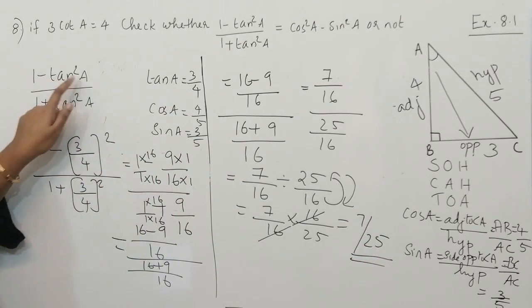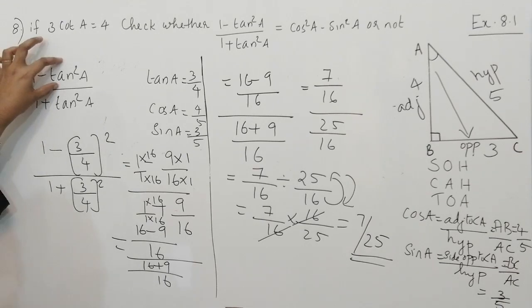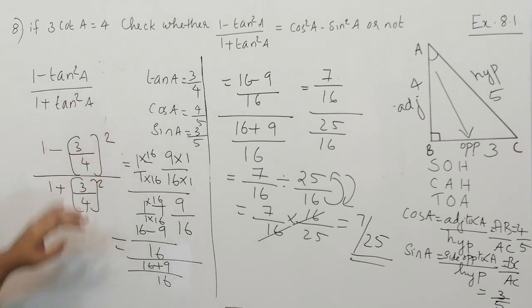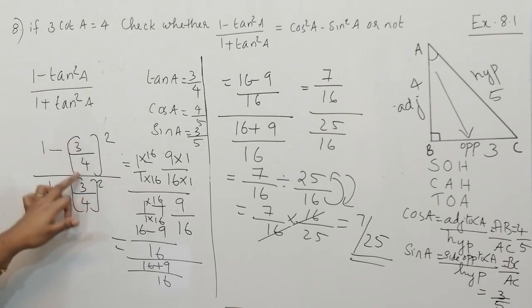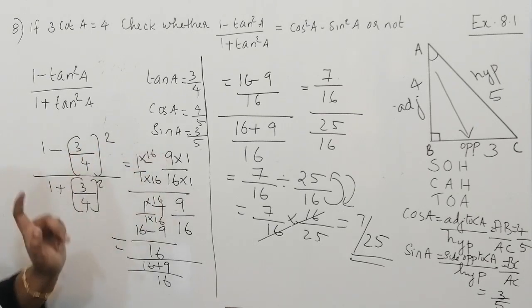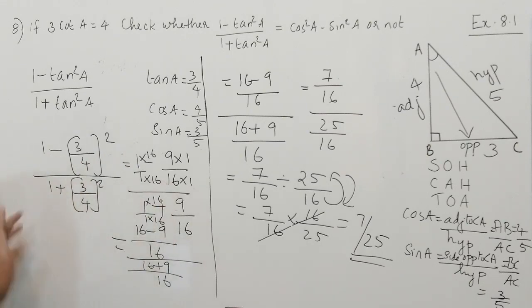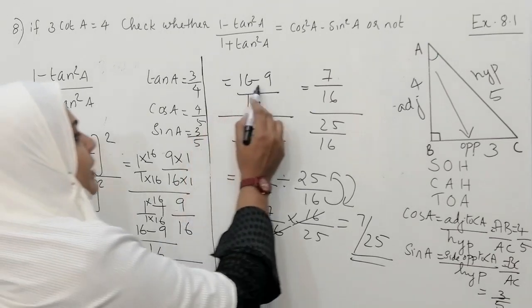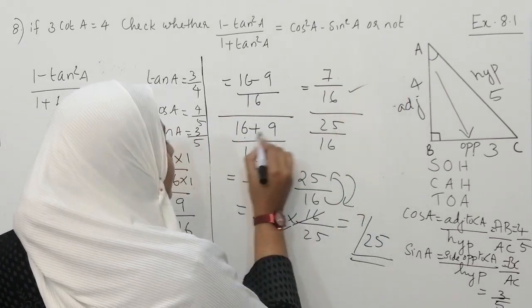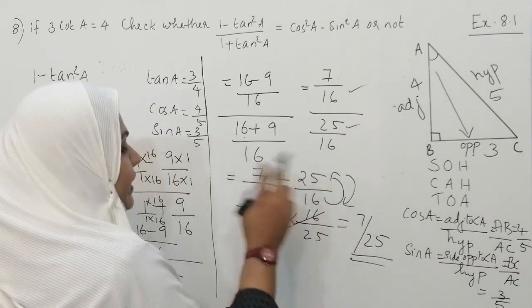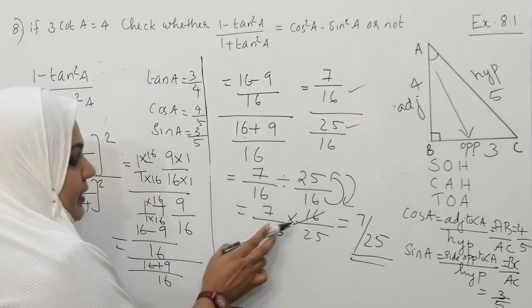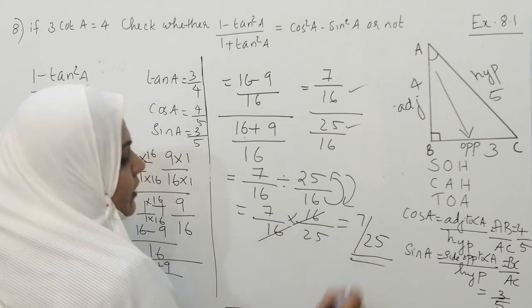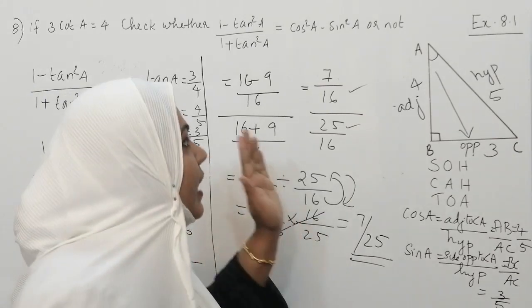So the left-hand side equals 7 by 25. I hope you understood how we solved the left-hand side.